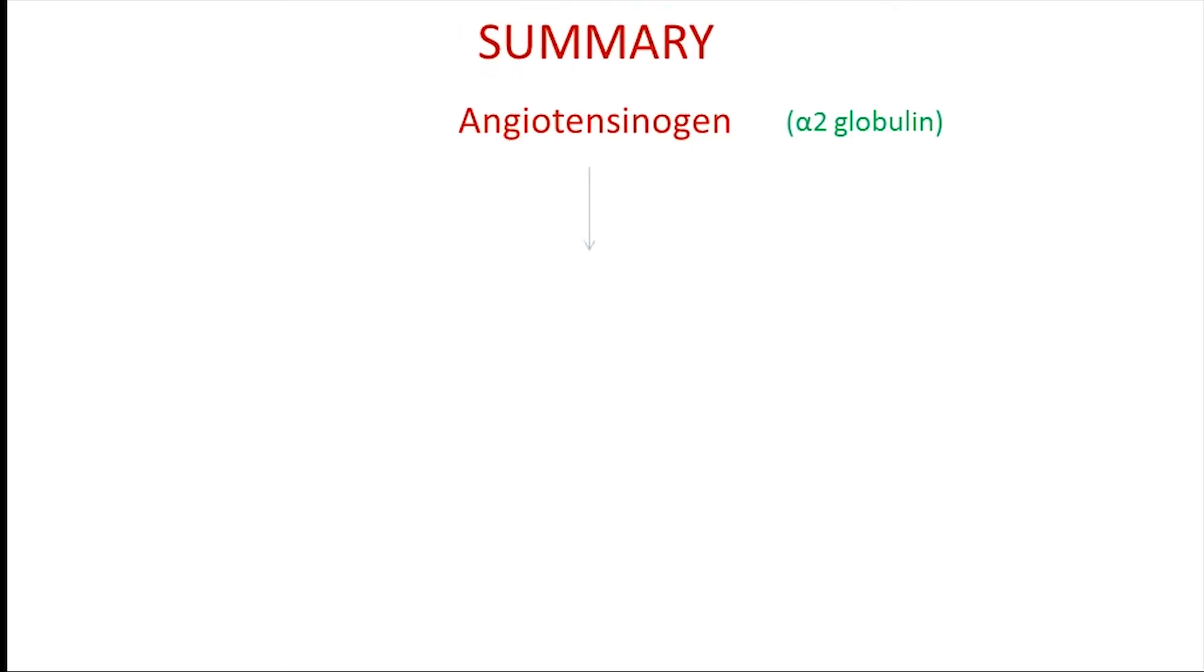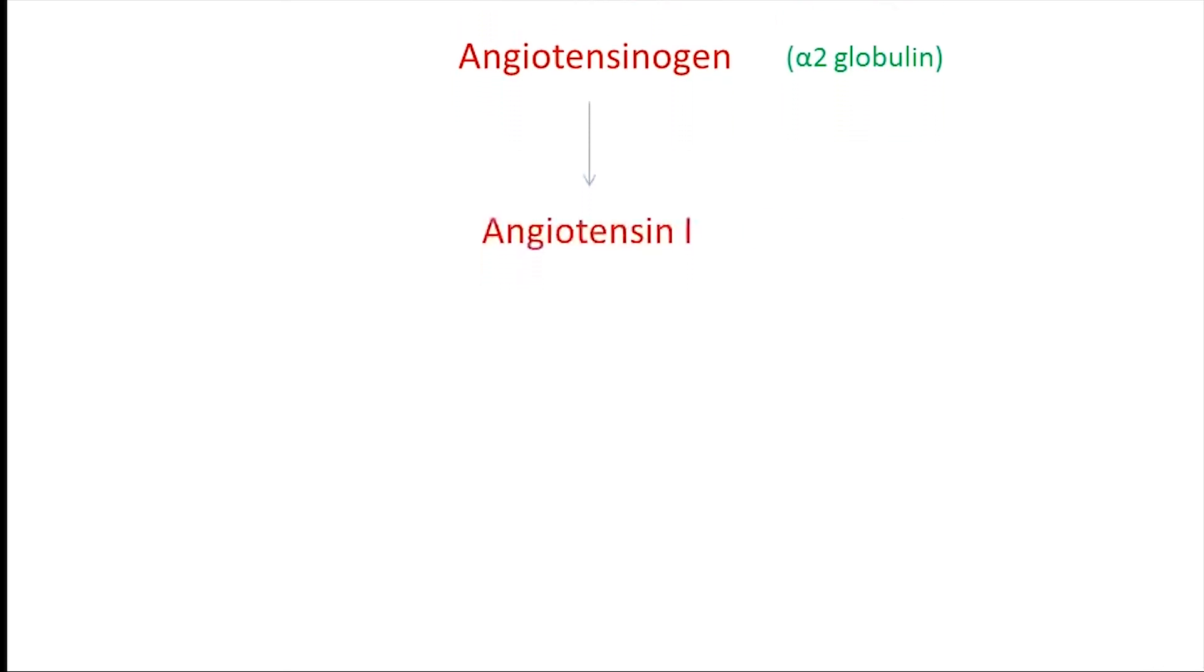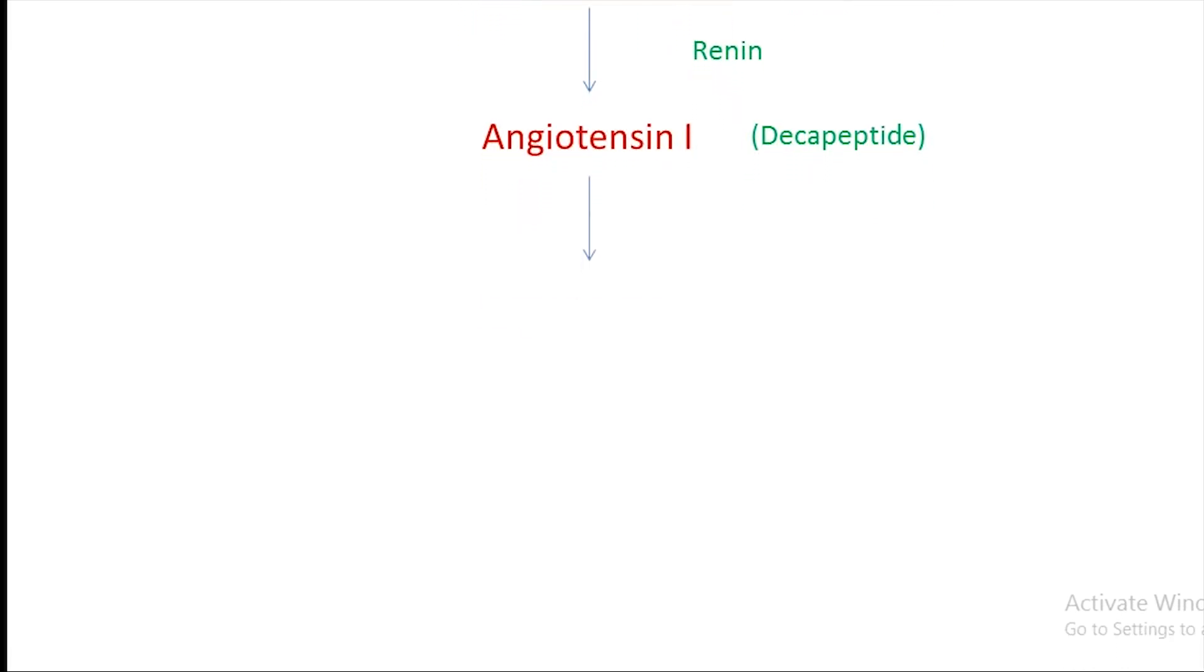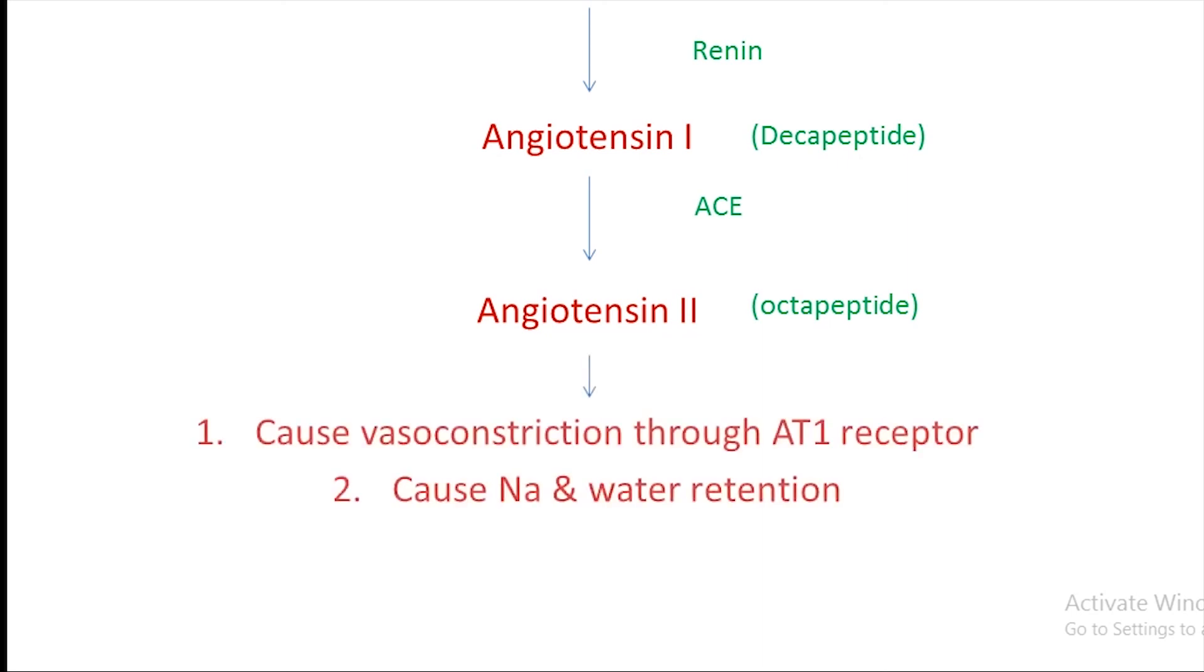Let's summarize quickly. Angiotensinogen is converted into angiotensin I in the presence of renin. Angiotensin I is converted to angiotensin II in the presence of angiotensin-converting enzyme. This angiotensin II causes vasoconstriction through the AT1 receptor and causes sodium and water retention, which will lead to a rise in blood pressure.